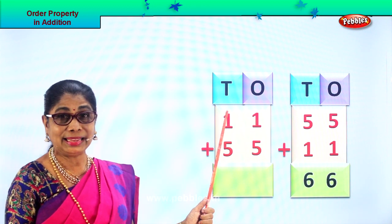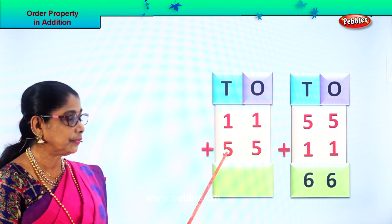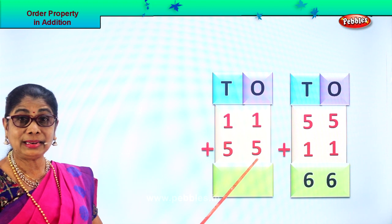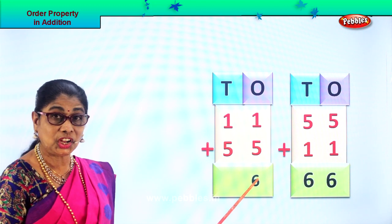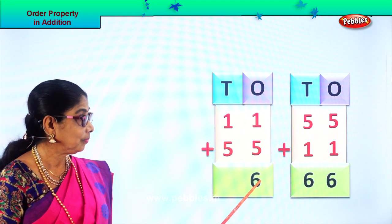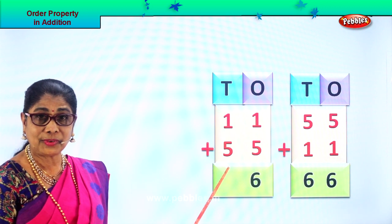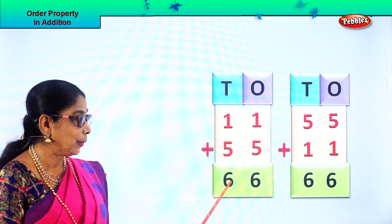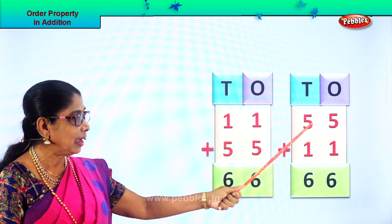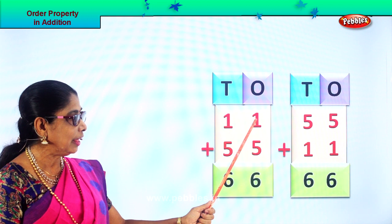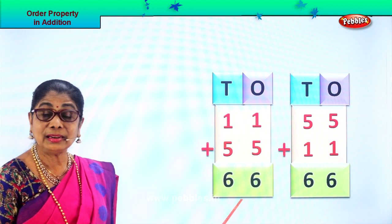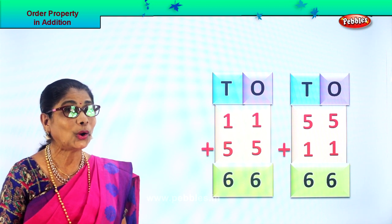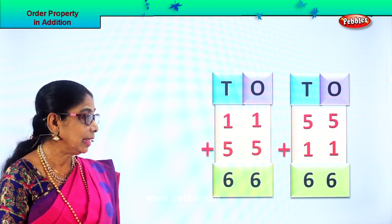Now we are going to add 11 plus 55. Let's add all the ones: 1 one plus 5 ones is 6 ones. Then 1 ten plus 5 tens: 5 plus 1 is 6 tens. So whether it is 55 plus 11 or 11 plus 55, your answer is 66. Order property of addition!